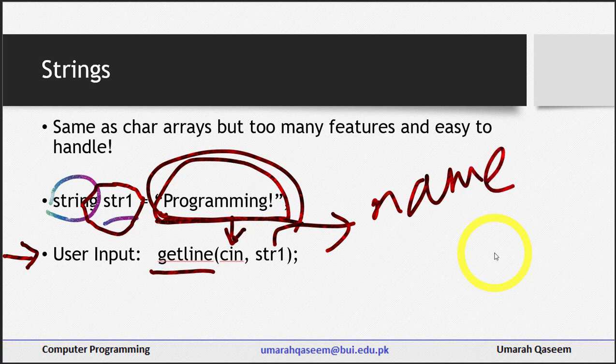Which we have str1 right here. So what actually is happening, whatever will be present in cin will be copied to string one, will be written in str1. And what is cin? Cin is your input that you are entering while running your code, entering from your keyboard. So it will just be copied in string one.